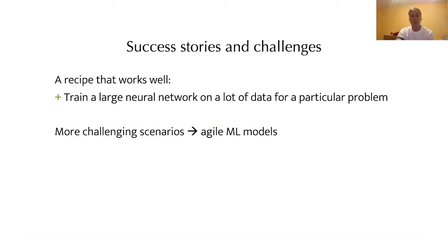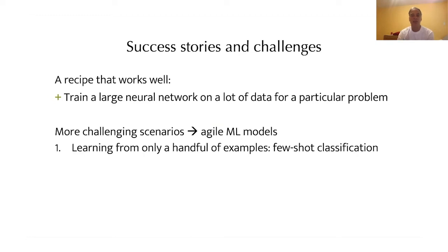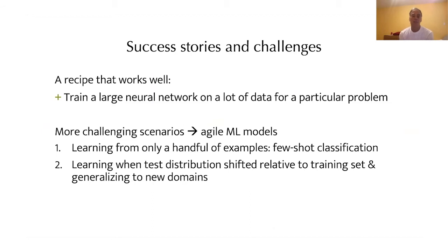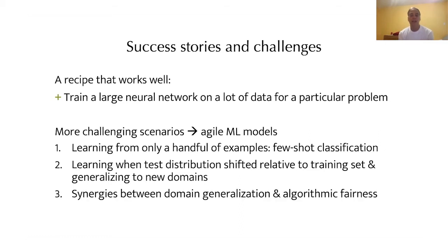Today I want to focus on more challenging scenarios with the aim of moving towards agile machine learning models. What do I mean by agile models? One is that we'd like models that can learn from only a handful of examples — I'm going to tell you a lot about few-shot classification, which is towards that aim. The second question is how do our models learn when the test distribution has been shifted relative to the training set — how can we generalize to new domains that are different than what we train on? And the last one is a bit surprising: I want to show some synergies between domain generalization and a different field known as algorithmic fairness. That's the outline of the talk.